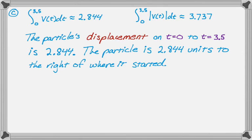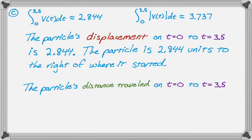I always wish there were units on these problems, it just would make it easier to write these answers. And then the second integral of absolute value of v of t dt is just distance traveled. So the particle's distance traveled on t equals 0 to t equals 3.5 is the value that we got, so 3.737.